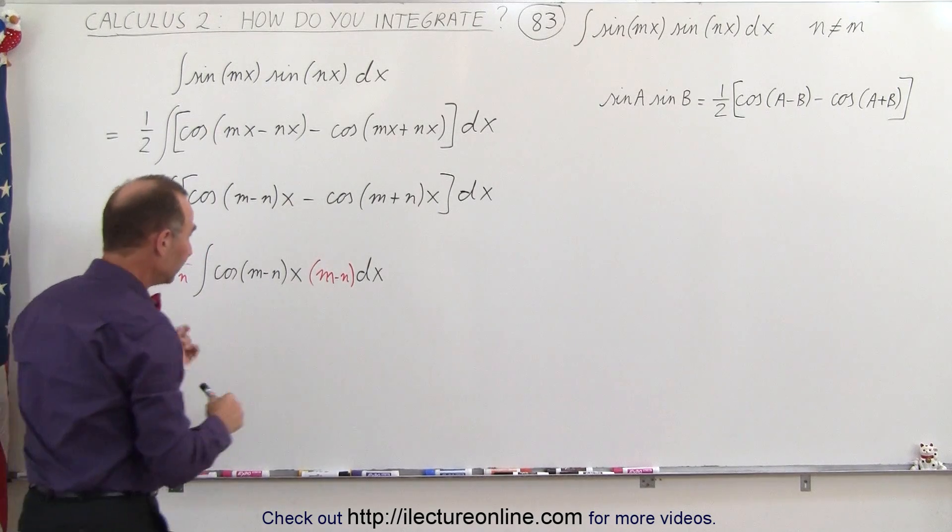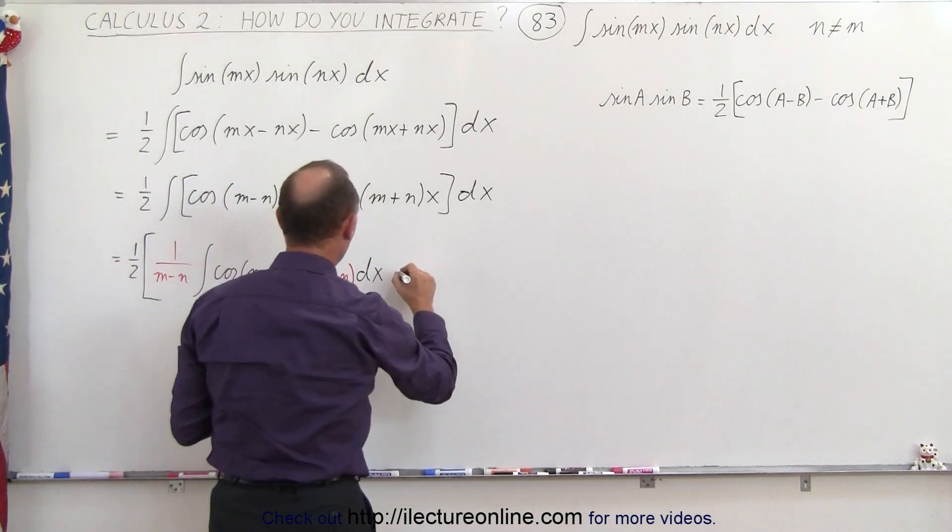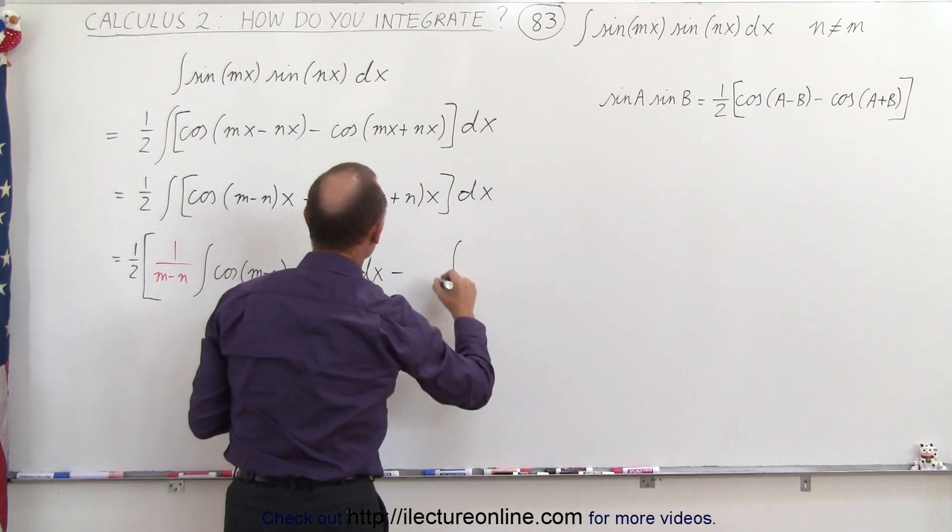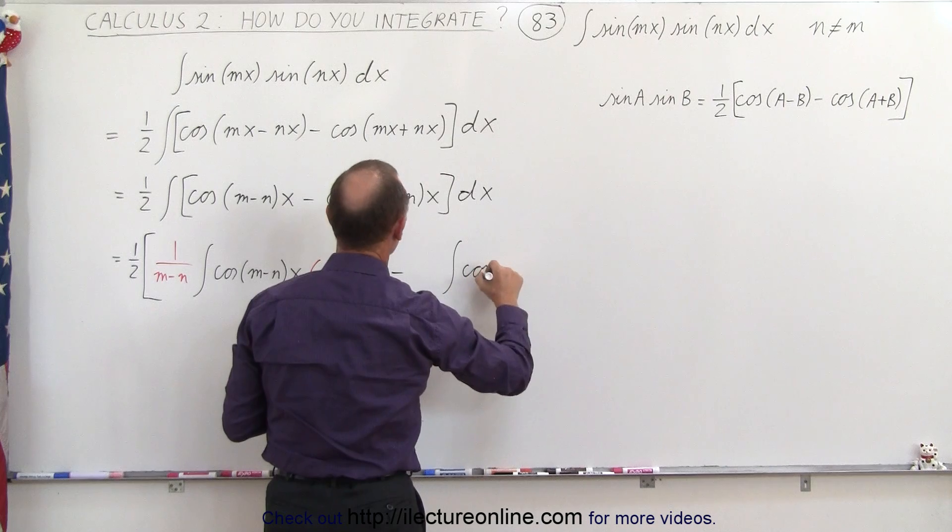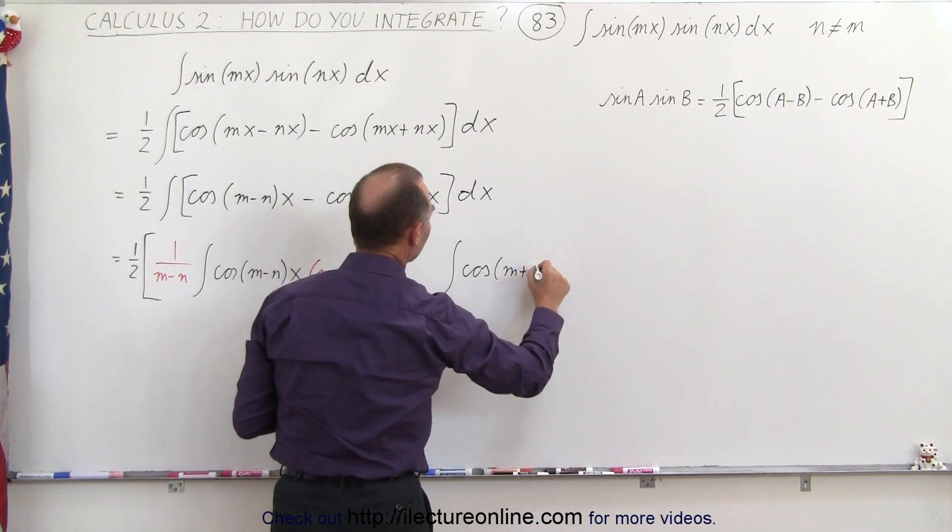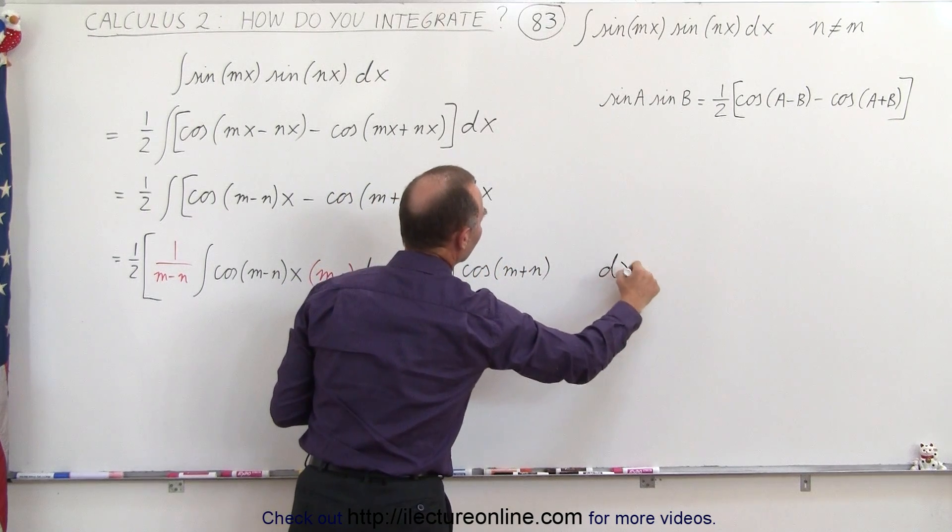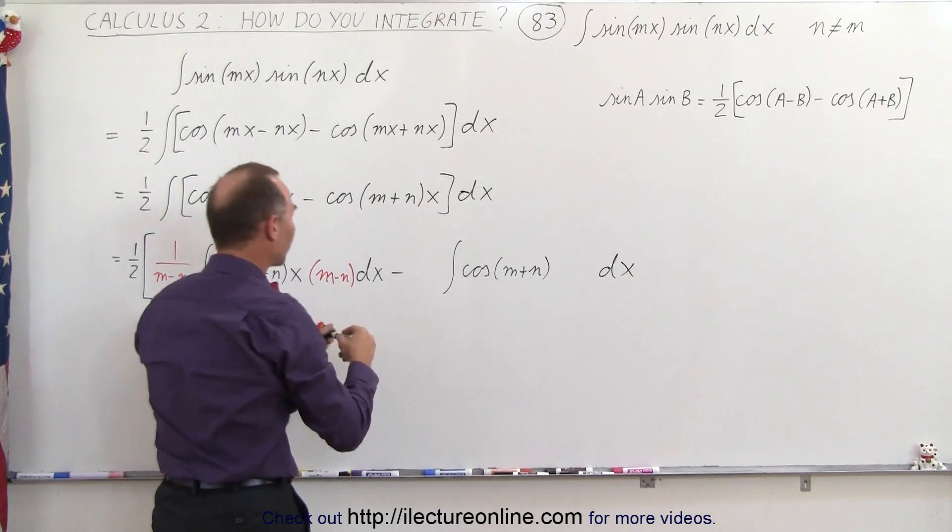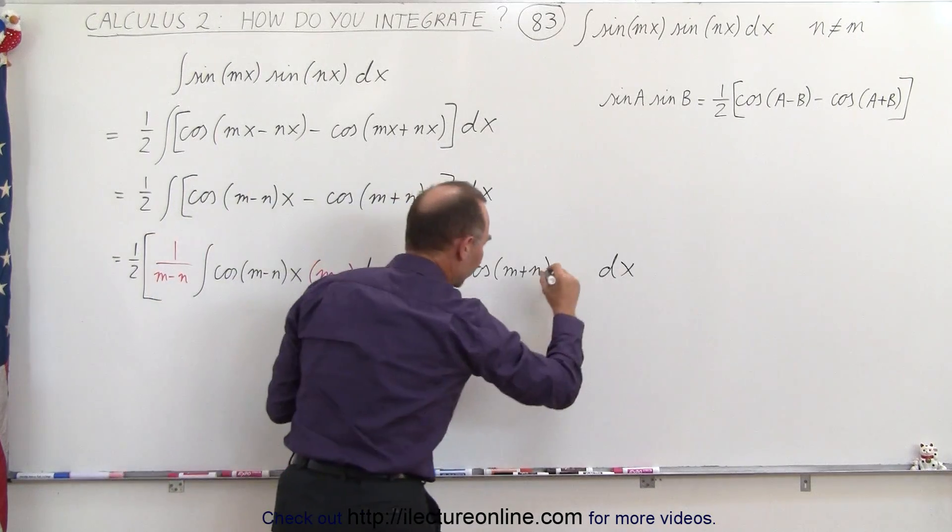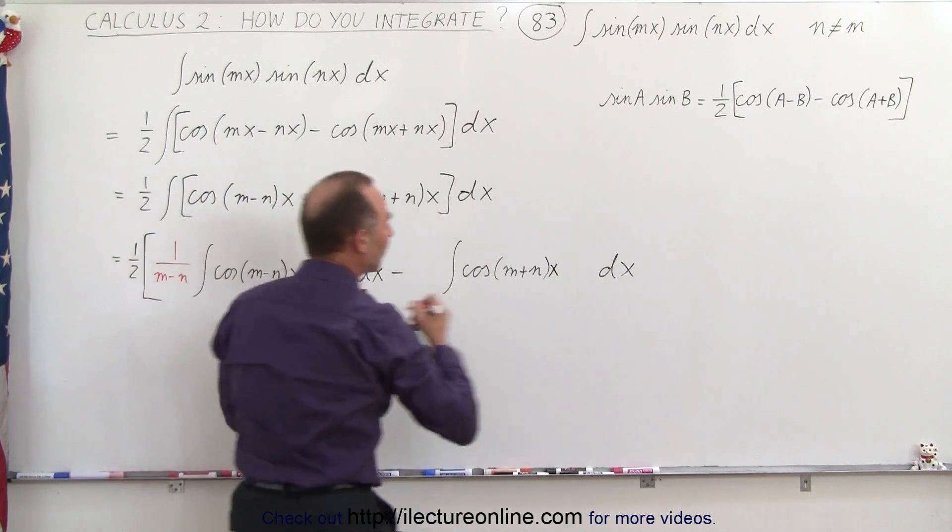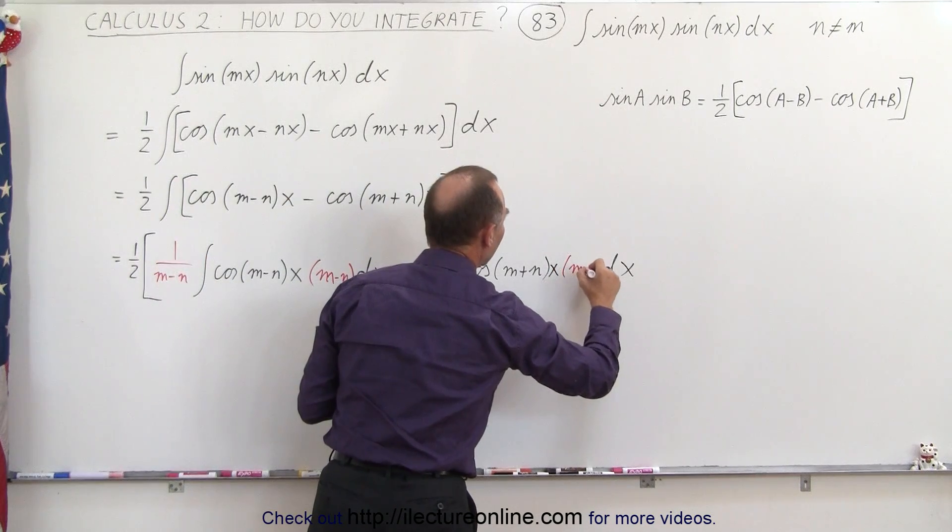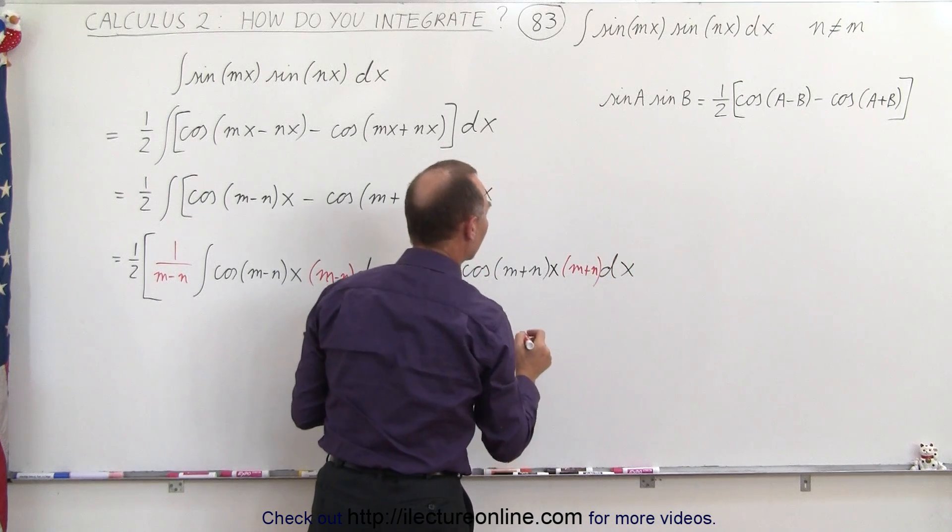We do the same with the second integral. So this becomes minus the integral of the cosine of m plus n times dx, and notice I left some room again because I'm going to need the proper differential. I need an x there, and then I need the proper differential, m plus n.